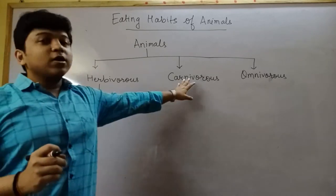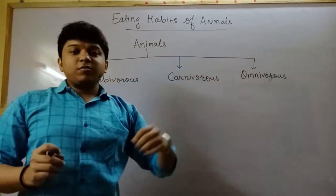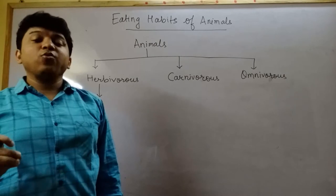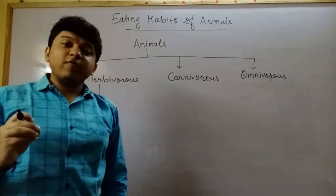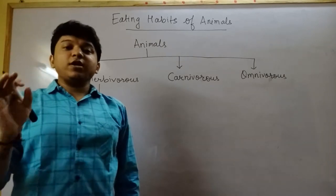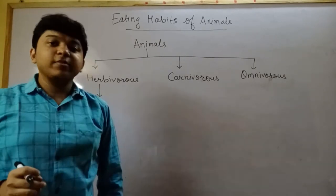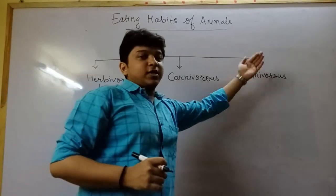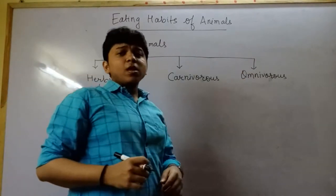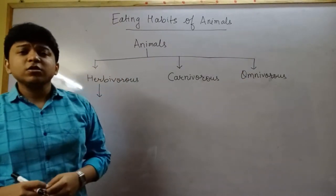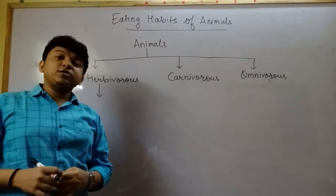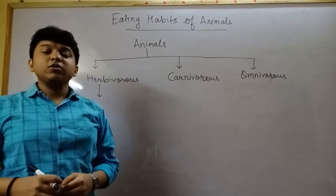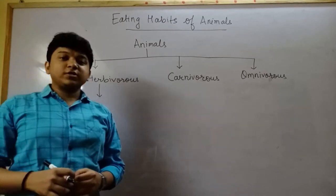Who are carnivorous animals? The animals which eat only flesh of other animals are called carnivorous animals. And animals which eat both plants and animals are called omnivorous animals.